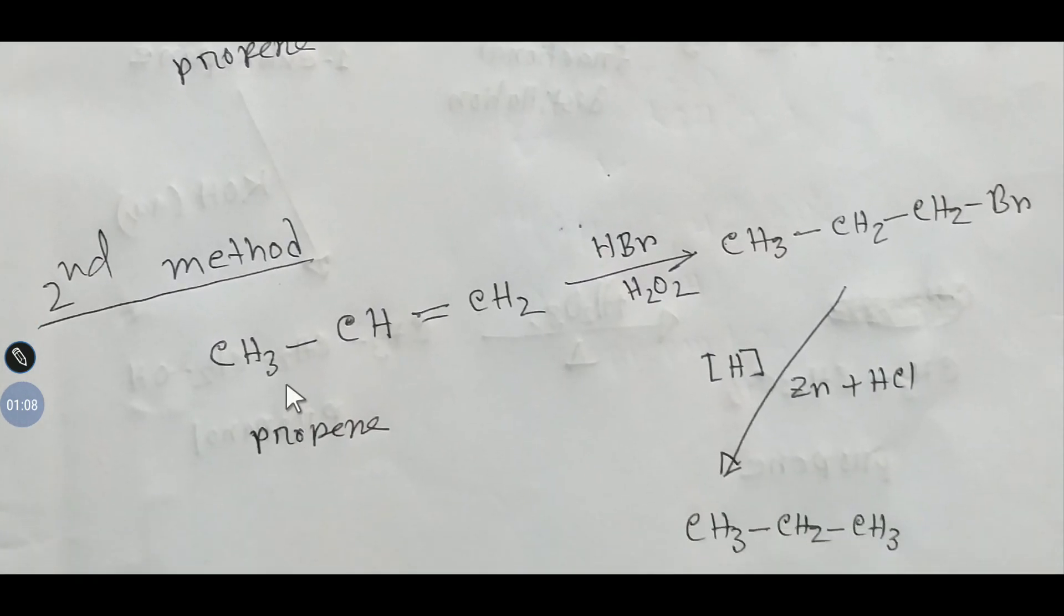Second method. If you add hydrogen bromide in presence of peroxide, then anti-Markovnikov rules will be followed here.